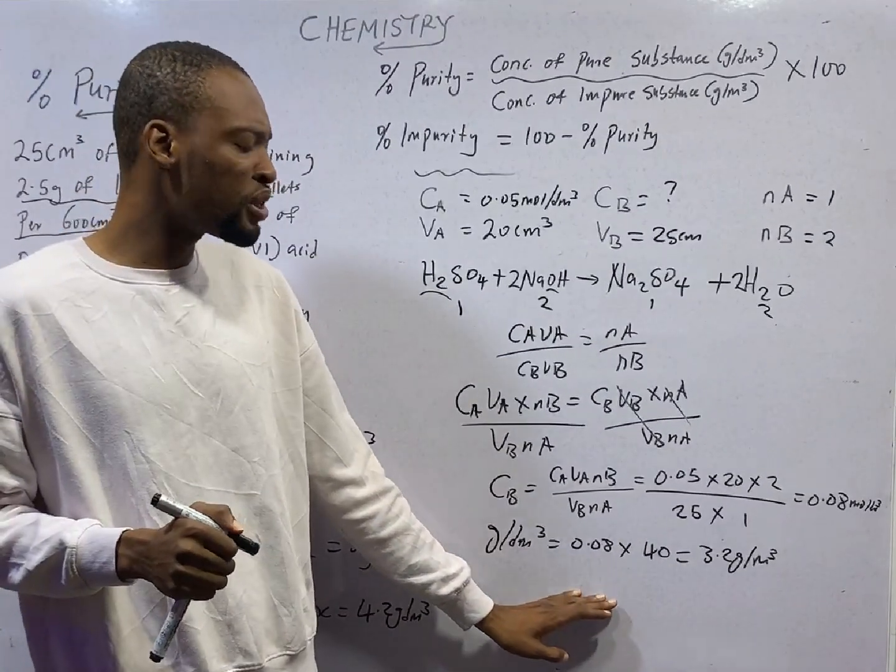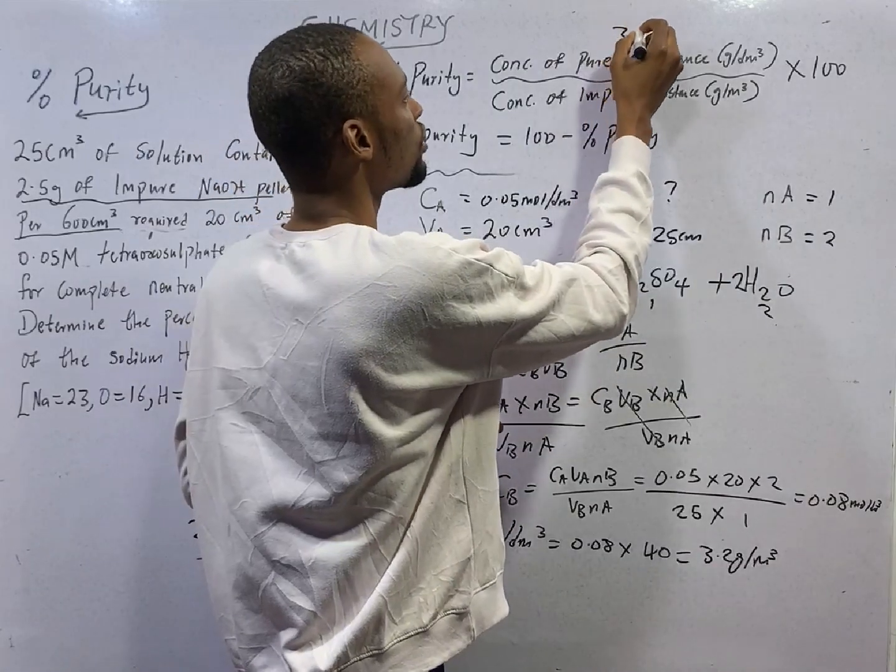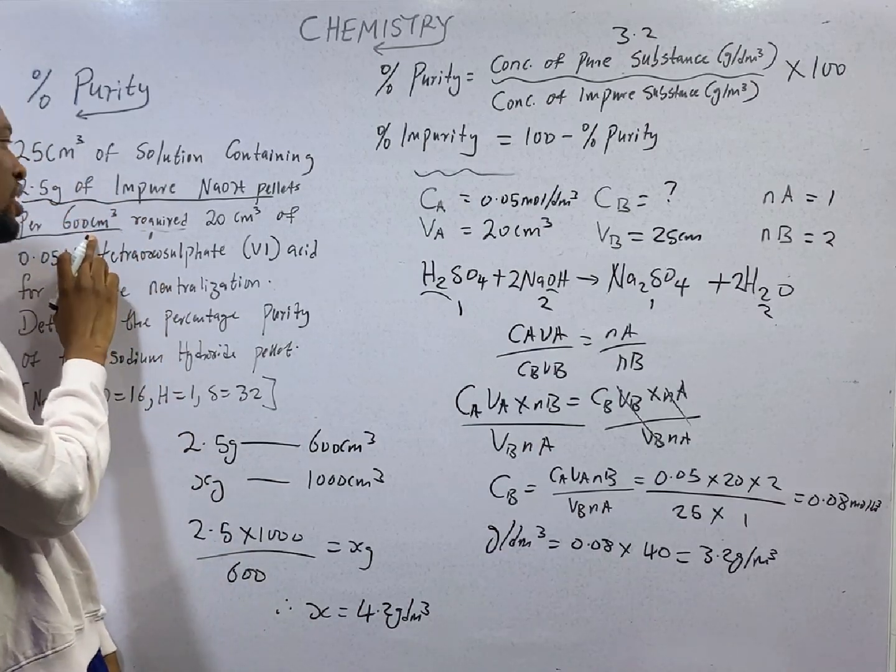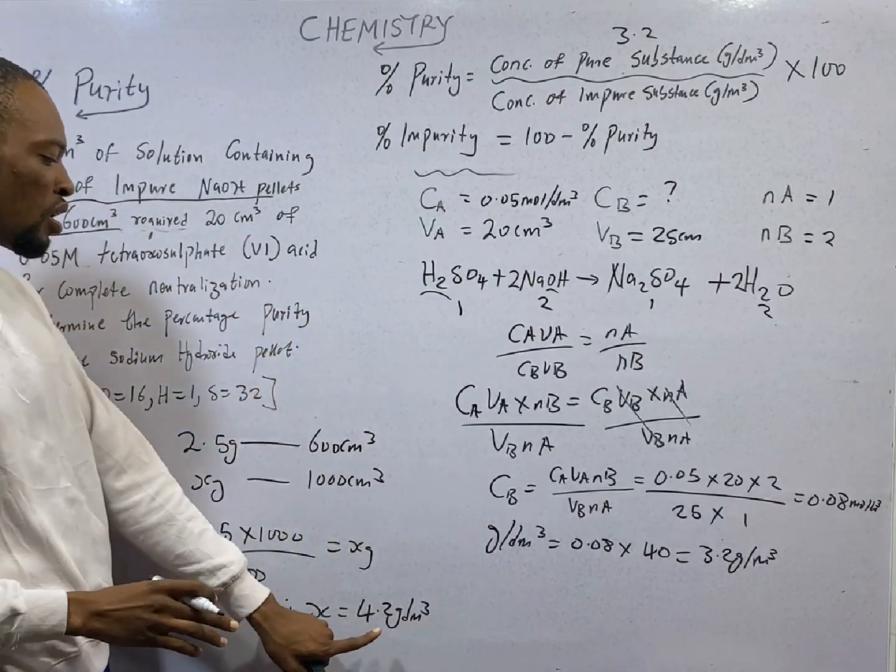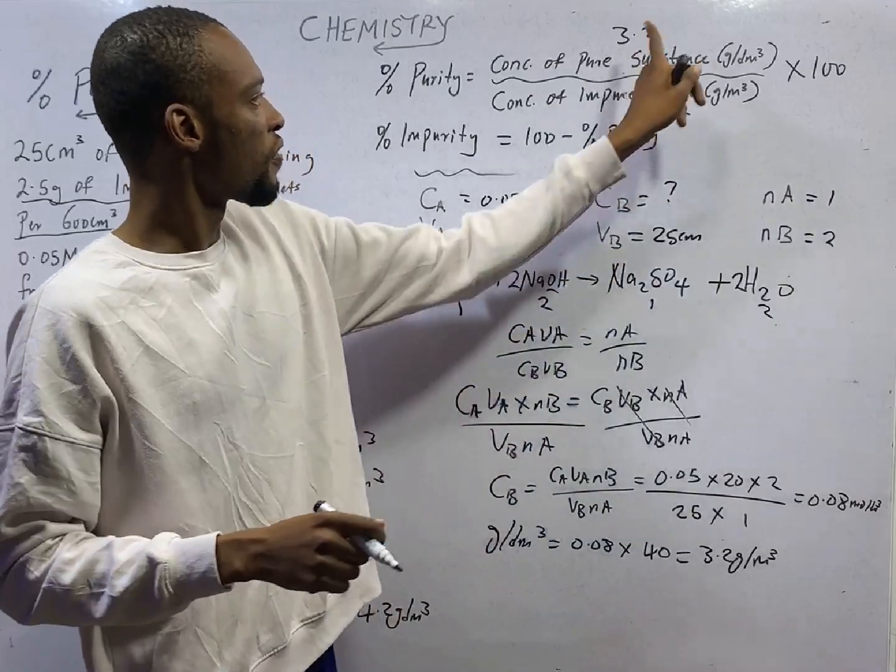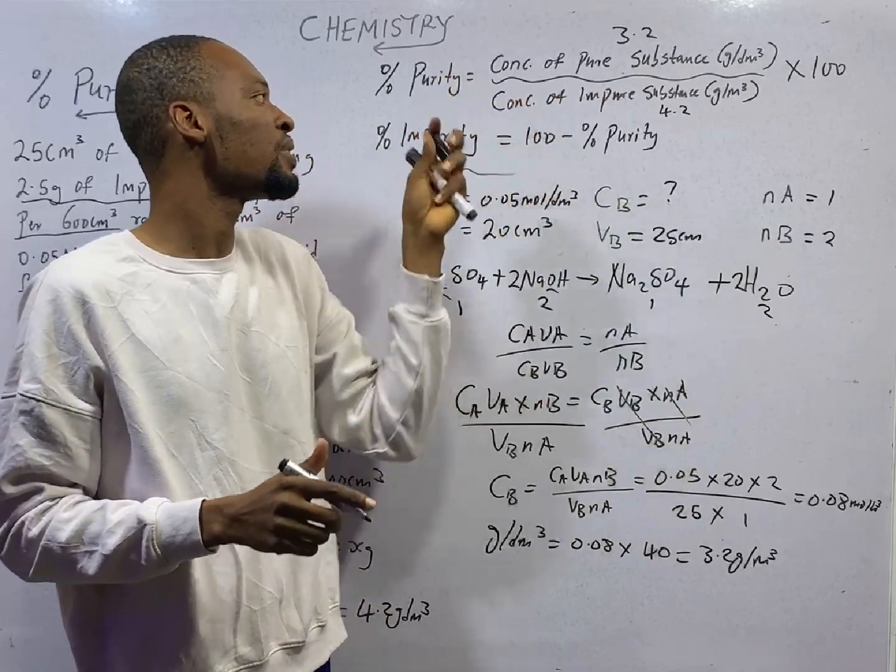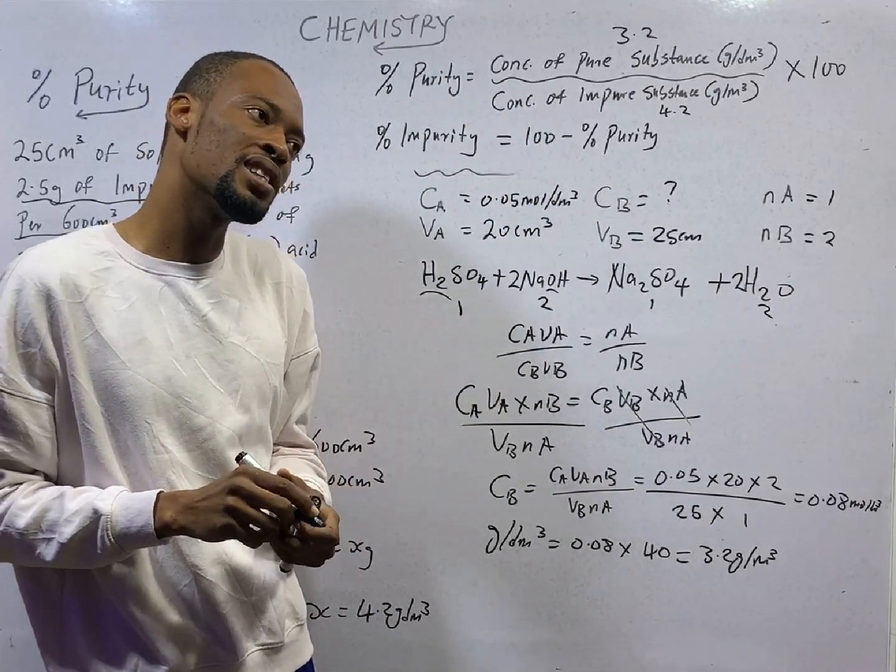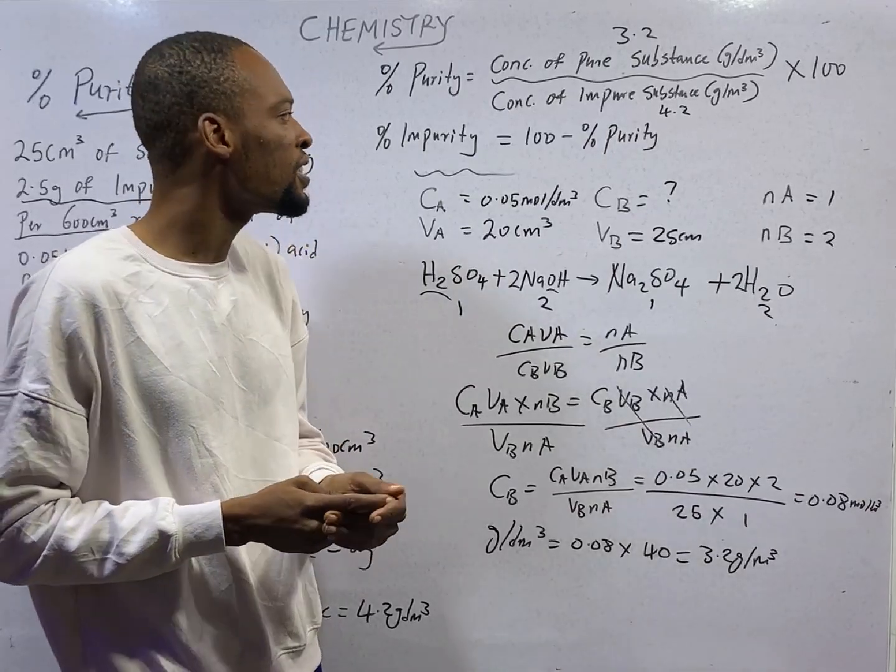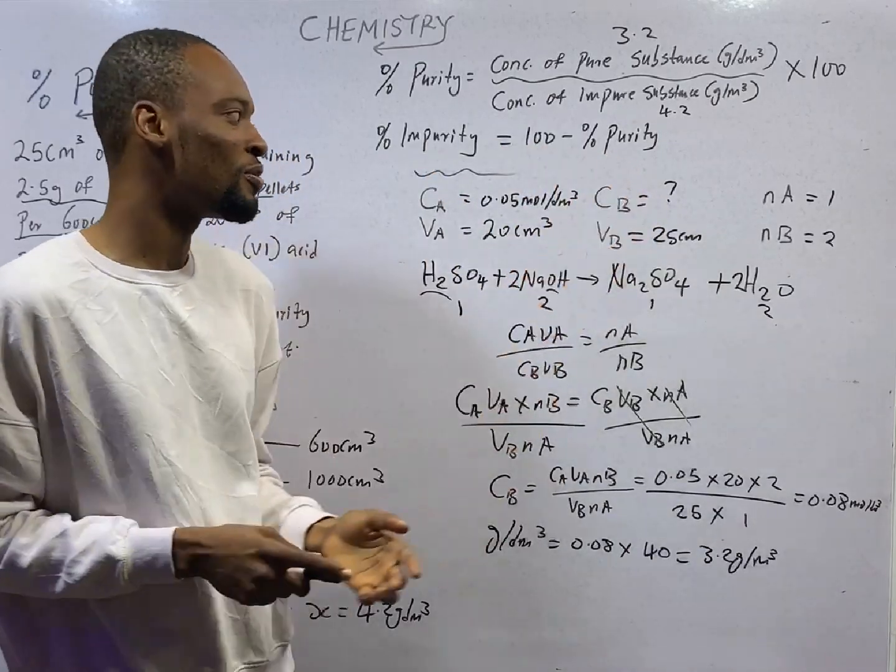Now we've gotten the concentration of the pure sodium hydroxide to be 3.2 grams per dm³. We've gotten the concentration of impure, because they gave us in terms of 600 cm³, we have to change it to dm³. I've got 4.2 grams per dm³. So the impure is 4.2 grams per dm³. 3.2 grams per dm³ divided by 4.2 grams per dm³ times 100, that is the percentage purity. And that should give you 76.2%. What if you are asked for percentage impurity? Percentage impurity will simply be 100 minus percentage purity.